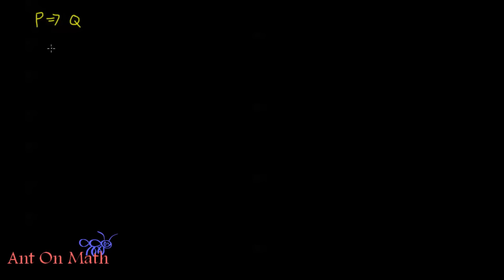One is called the converse. The converse of the statement P implies Q is Q implies P. We call this the converse of this statement. Given that P implies Q, the converse is Q implies P.